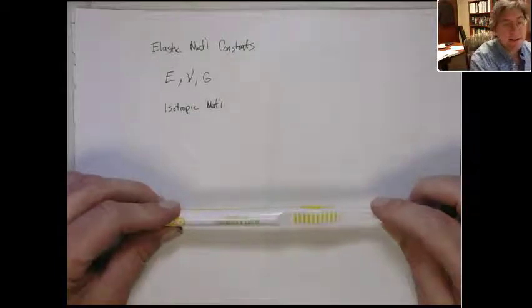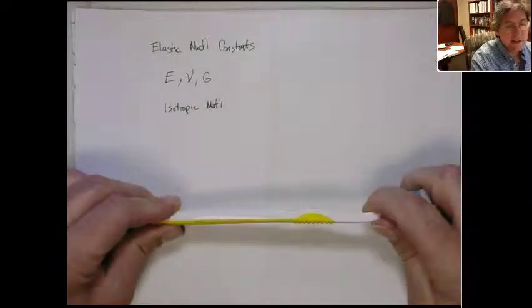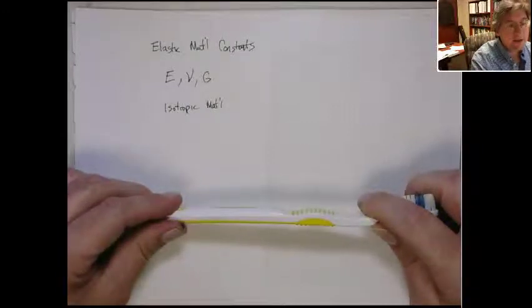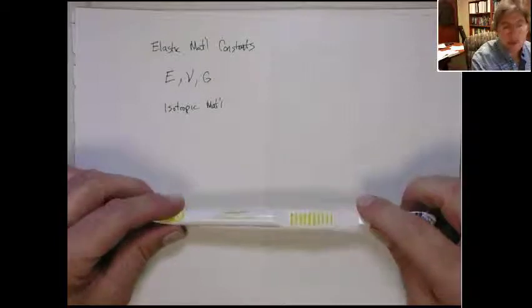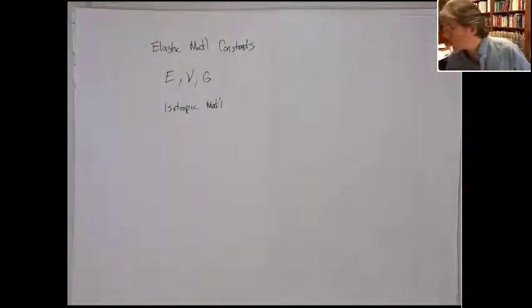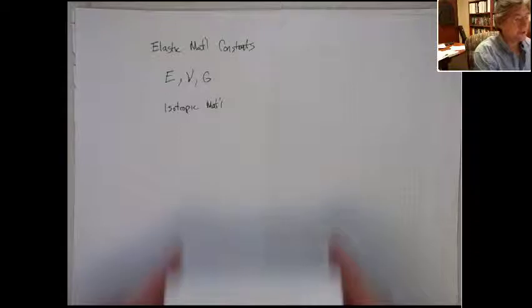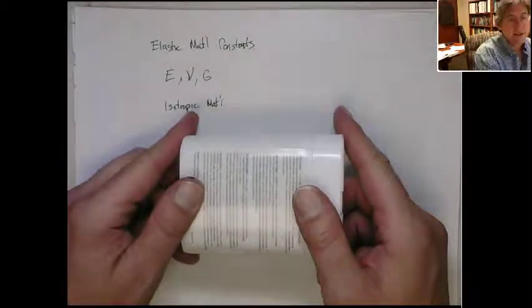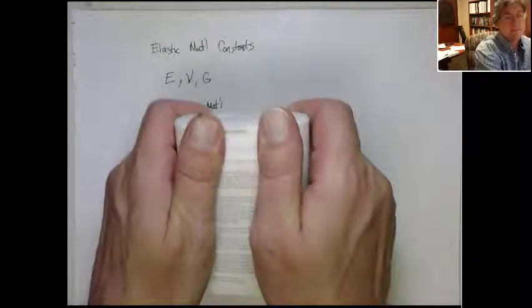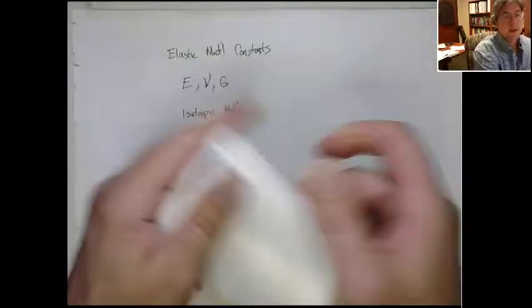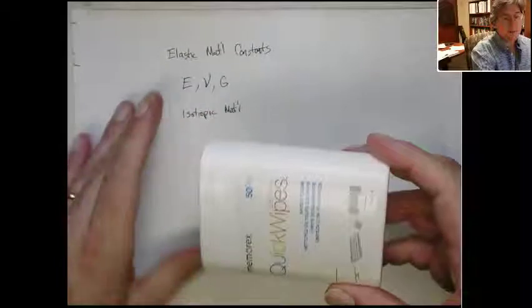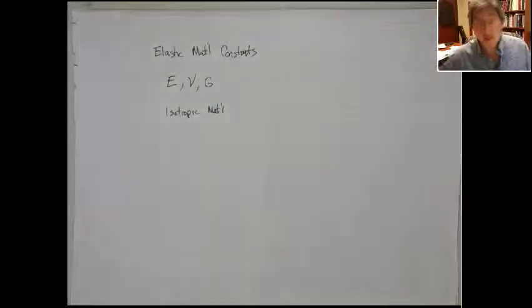A little promo for Dr. Stein. If we pull on a toothbrush, you get the same response regardless of which direction you apply. Stiffness in all directions is the same. If I pull in this direction, I get the same Young's modulus as if I pull in this direction. There's no preferred direction. That's an isotropic material.